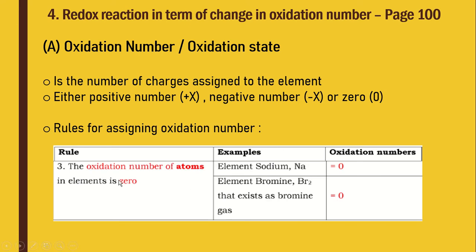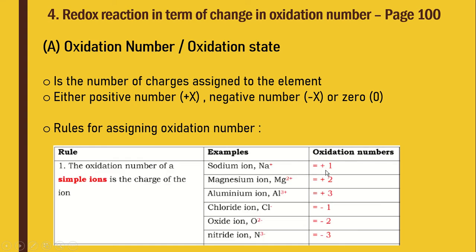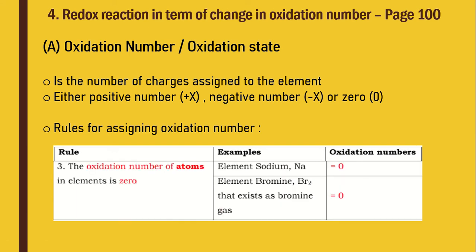Rule 3: The oxidation number of atoms in an element is 0. Elements are atoms in their pure form. For example, sodium metal Na has oxidation number 0. Bromine gas Br₂ also has oxidation number 0. Be careful to differentiate: sodium ion has a positive sign (+1), but sodium metal (atom) has oxidation number 0.